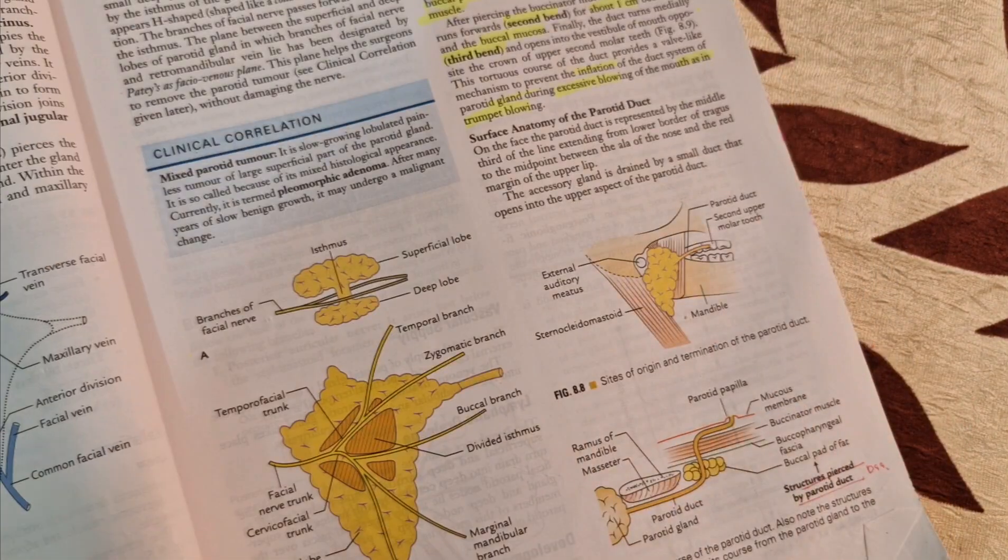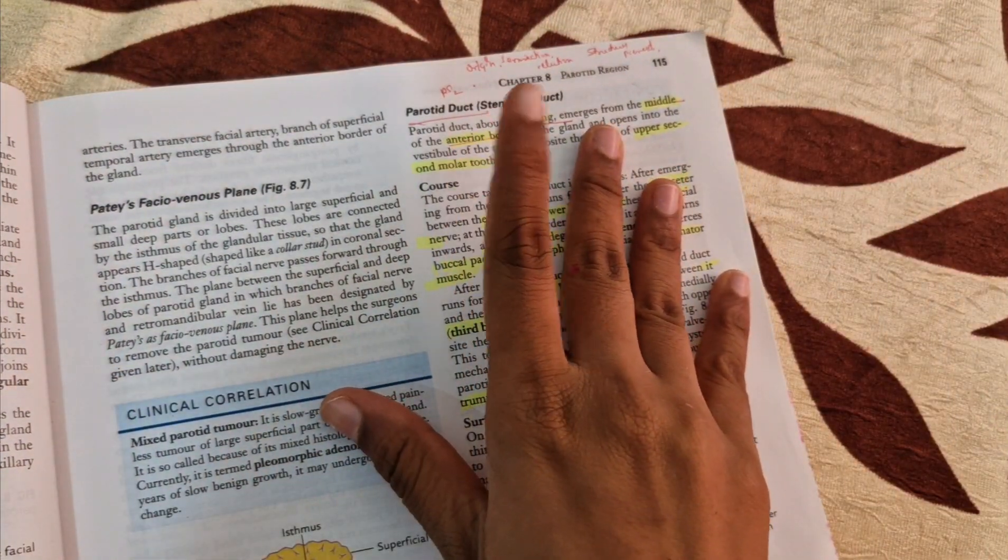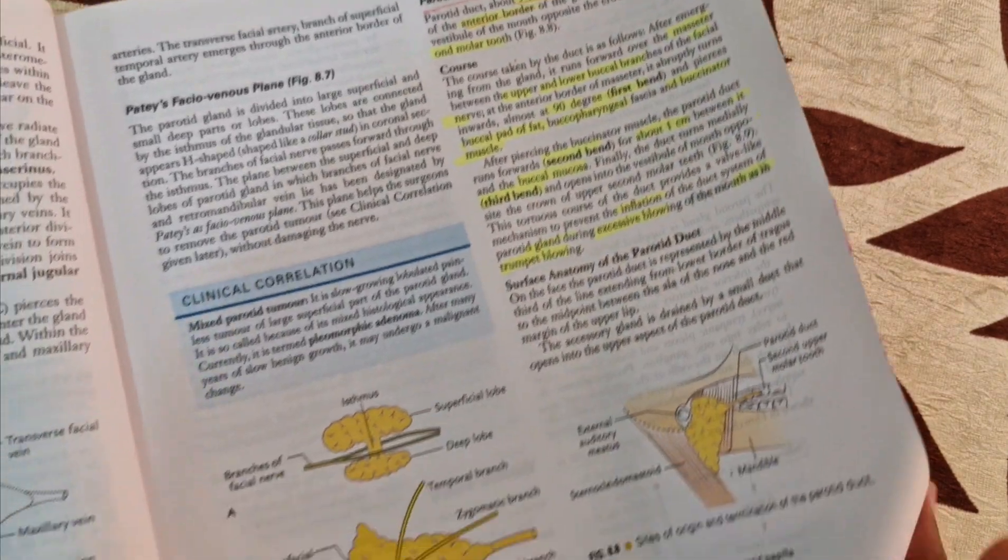And the next question from this chapter will be structures present within the parotid gland, which is important. And parotid duct is important for 5 mark question. They will ask origination, termination, relation, and structures pierced by this parotid duct. Structures pierced, important.